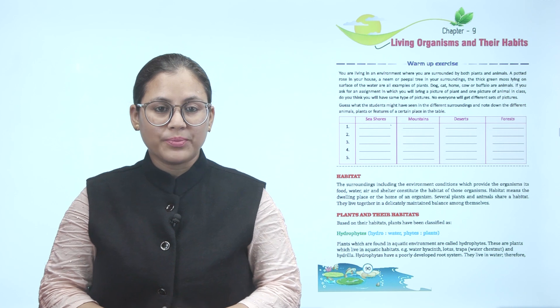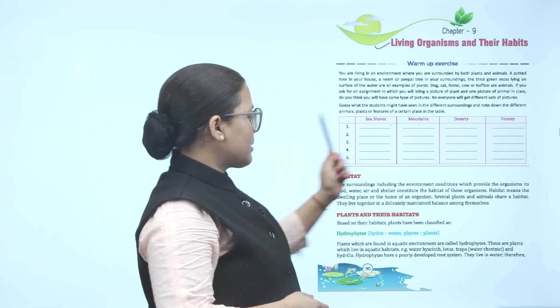If you have an assignment in which you will bring a picture of plant and one picture of animal in class, do you think you will have same type of pictures? No, everyone will get different sets of pictures. Guess what the student might have seen in the different surroundings and note down the different animals, plants or features of a certain place in the table.